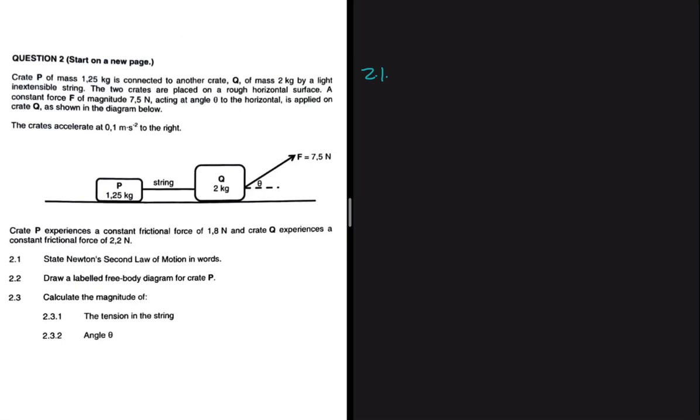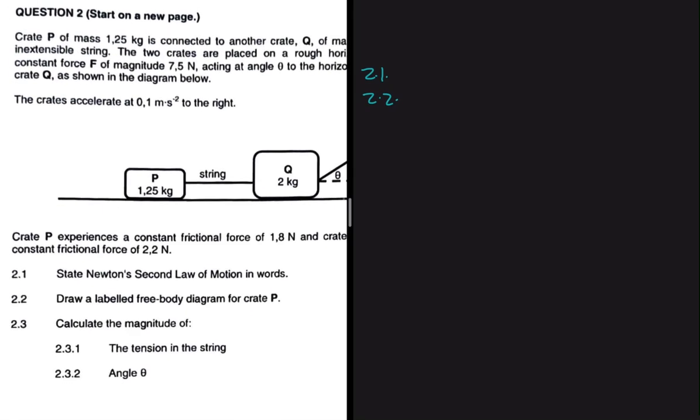Question 2.2: Let's draw a labeled free body diagram for crate P. So crate P is connected to crate Q by a string, so there must be tension on crate P moving in that direction. Because crate P is lying on a surface, we must have a normal force, but not only a normal force but also the gravitational force. So we should have Fg and the normal force there.